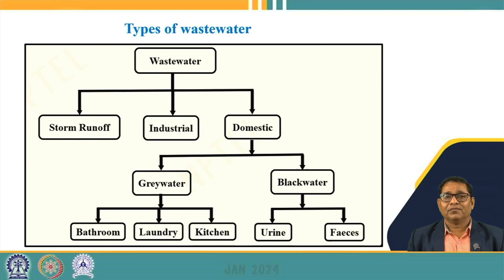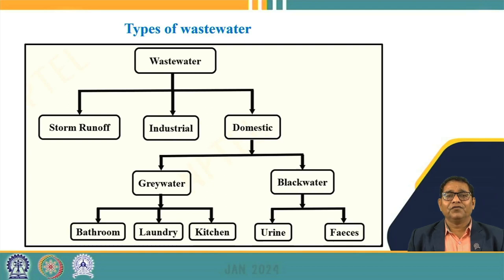Let us talk about the various types of wastewater generated from society. We can broadly classify wastewater as industrial wastewater, domestic wastewater, and storm runoff. Storm runoff is the amount of precipitation which does not infiltrate below the ground and directly reaches a surface water body as runoff, which may contain various types of inorganic materials like sand and silt particles laden into the receiving water body.